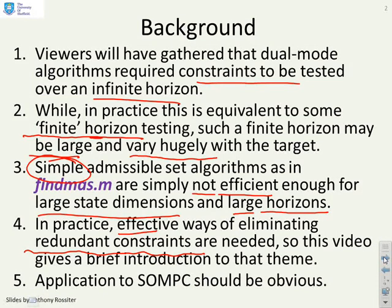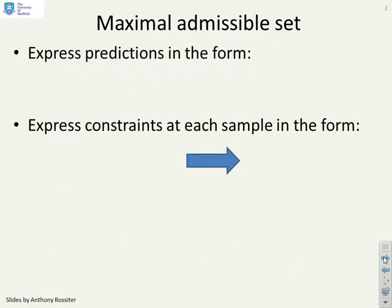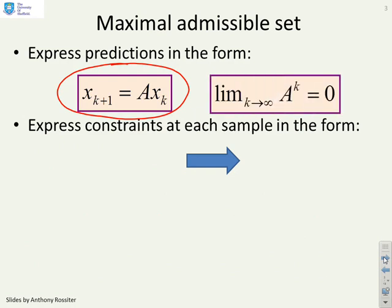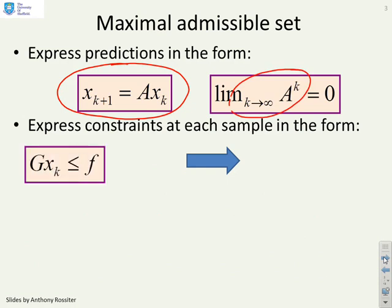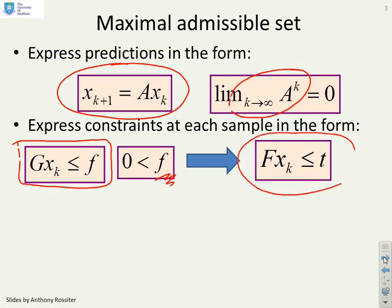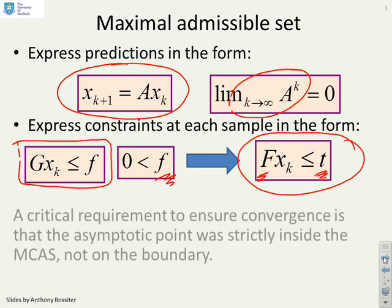We're going to introduce a more efficient algorithm and show it can be applied to dual mode predictive control. To remind you of the key points, we express predictions using an autonomous model where x captures all things that might vary, ensuring the limit as k goes to infinity of A^k is zero. We express constraints at each sample using linear inequalities, where f is strictly bigger than zero, and the admissible set takes this form where our job is to find appropriate f and t.